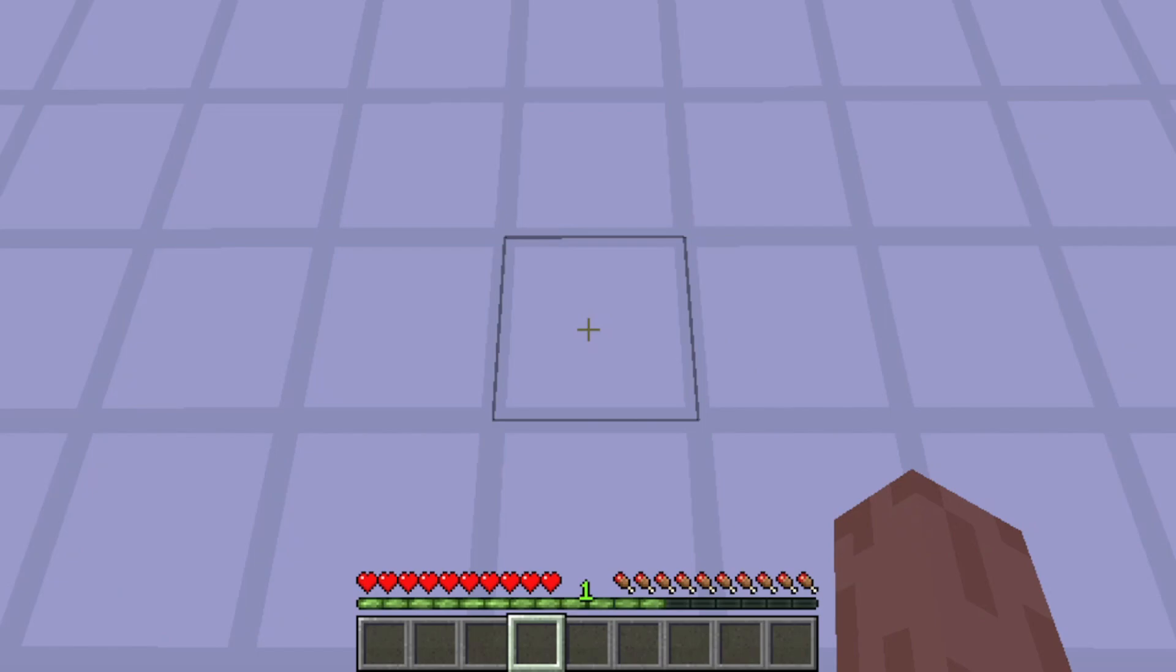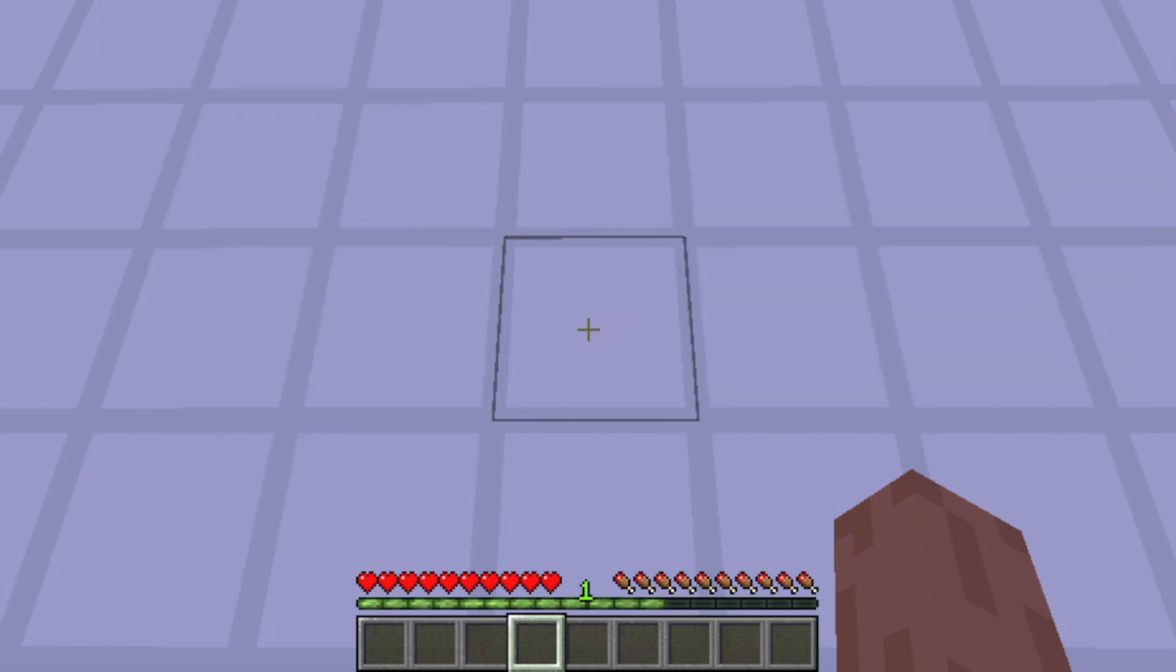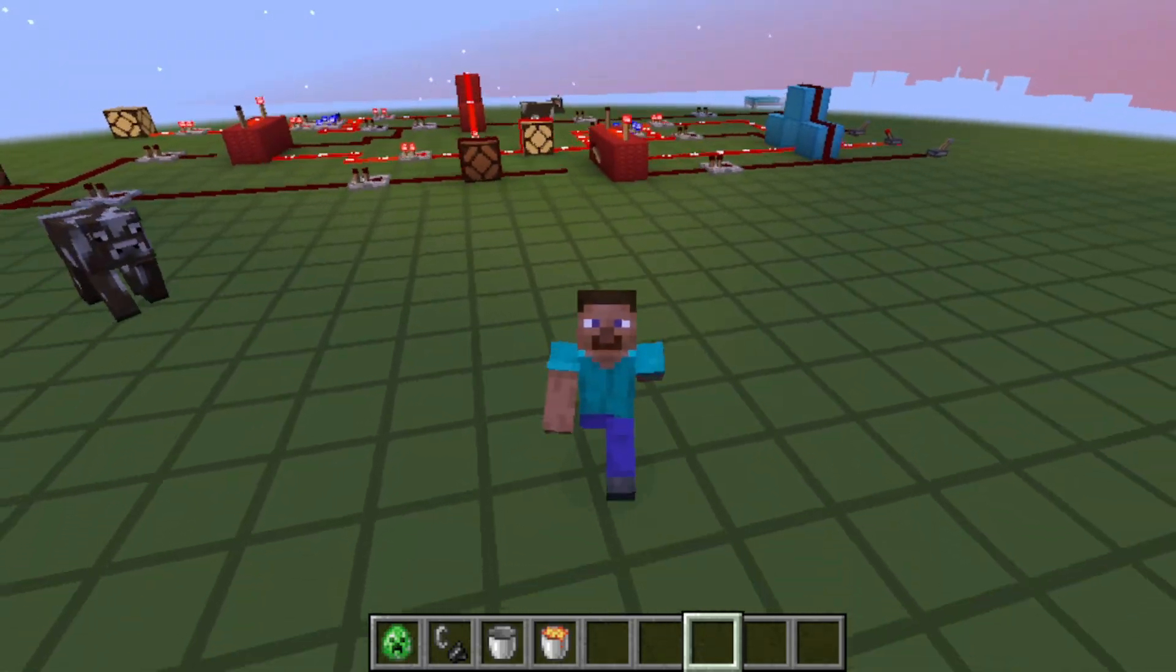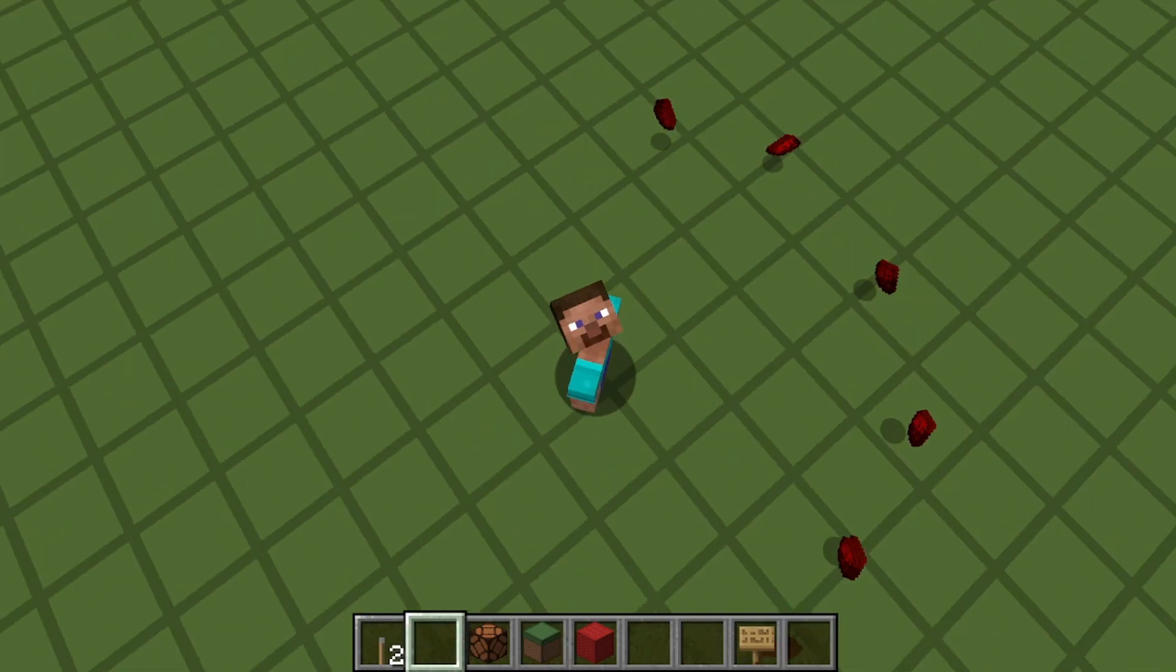Moving forward, you can build things like 8-segment displays. These take binary numbers and decode them into the decimal digits we actually read. You'll also want ways to store bits, like memory circuits, so you can keep track of numbers, states, or progress.